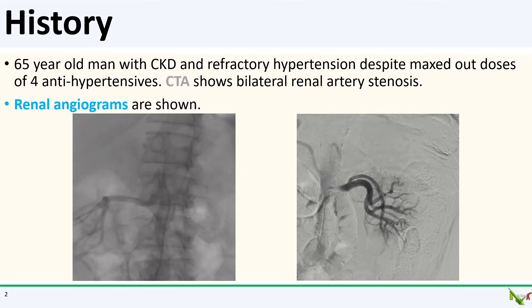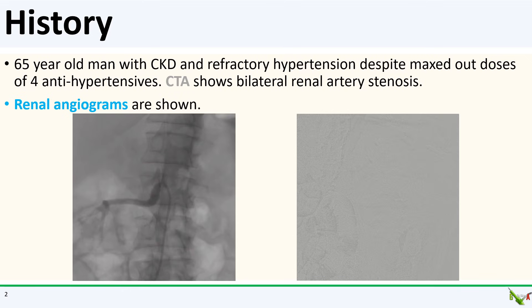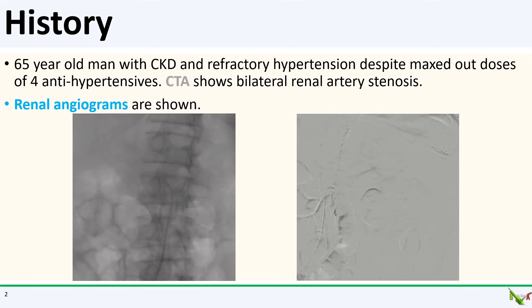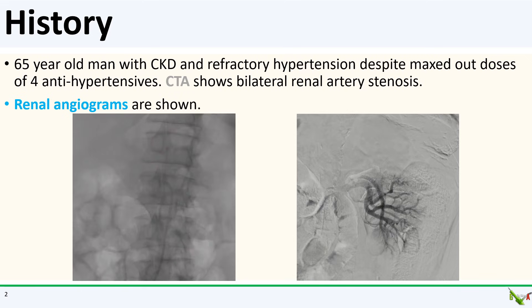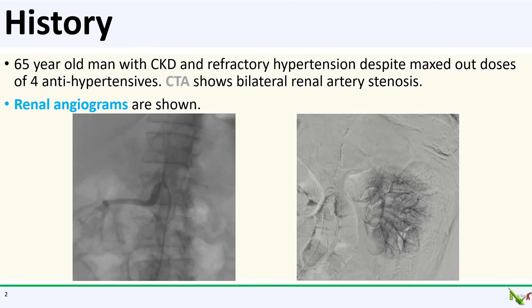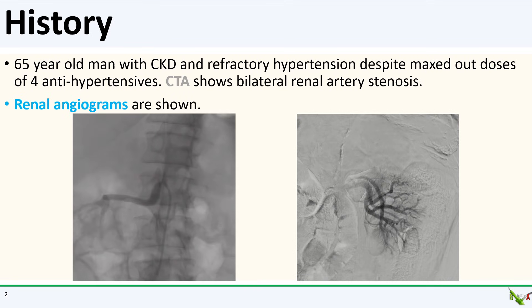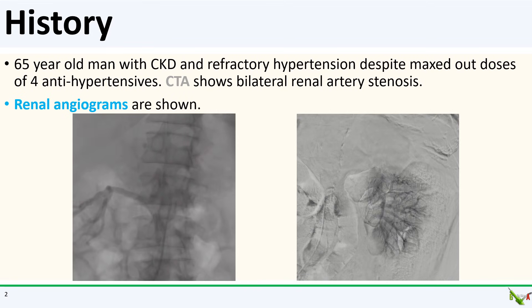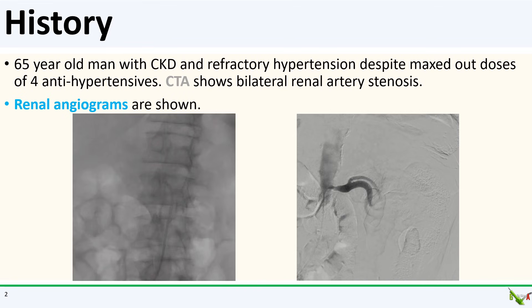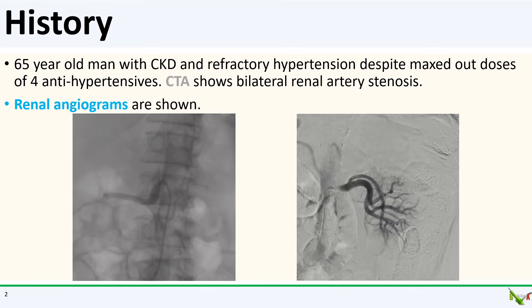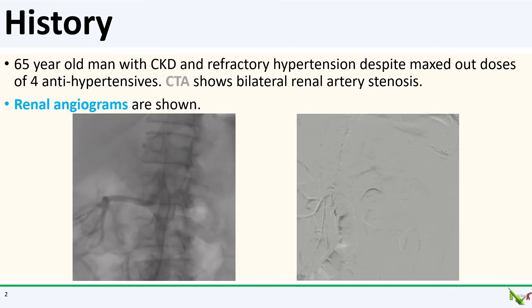As you can see here on renal angiography, there are severe stenoses at the ostia of both the right and left renal arteries. After some discussion, it was decided to proceed with bilateral renal artery stenting.